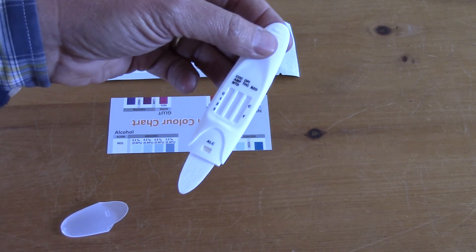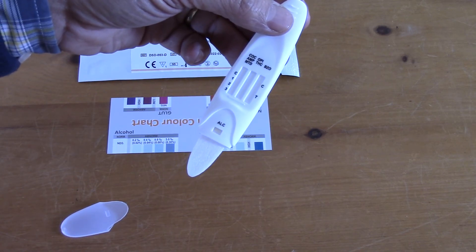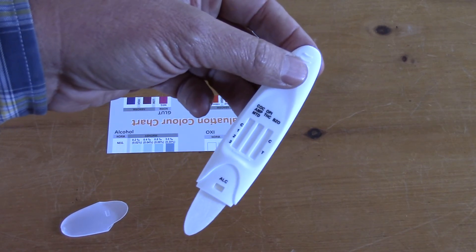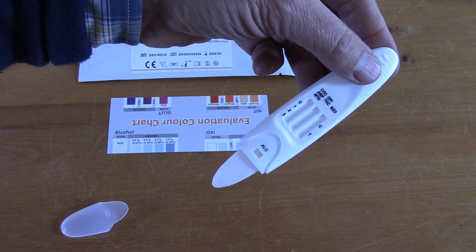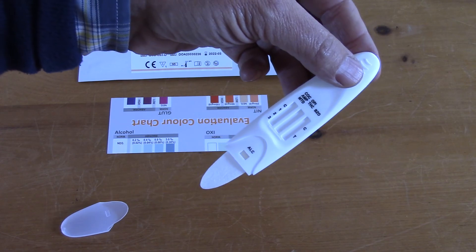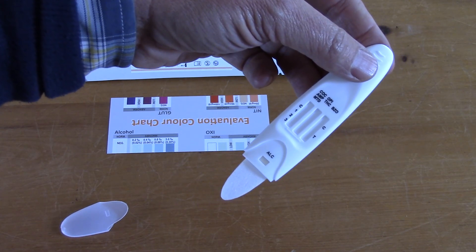What you do want to do before you do that is interpret the alcohol result which is read at two minutes after the test is started. So what we're going to do now is take a sample of saliva with this cassette and then show you how it runs and how to interpret the results.